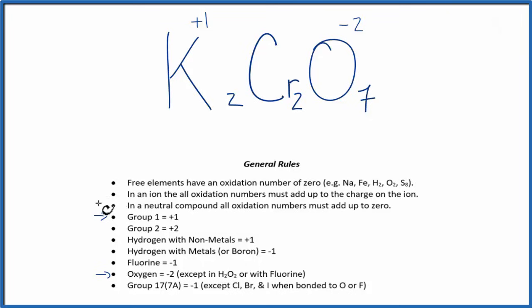We also know that in a neutral compound, and this compound here overall has a charge of 0, all of the oxidation numbers have to add up to that 0 there. So we have enough information to figure out the oxidation number on the chromiums now. Let's do that.